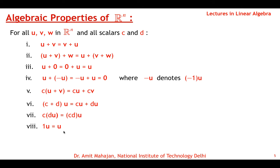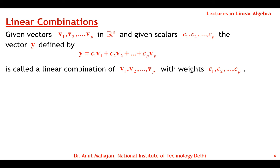Now we come to the major definition: linear combination. Given vectors V1, V2, …, Vp in Rn — each a column vector with N elements — and scalars C1, C2, …, Cp, the vector Y defined by Y = C1·V1 + C2·V2 + … + Cp·Vp is called a linear combination of V1, V2, …, Vp with weights C1, C2, …, Cp.